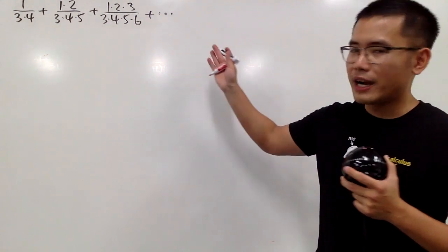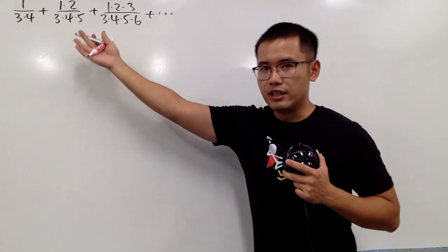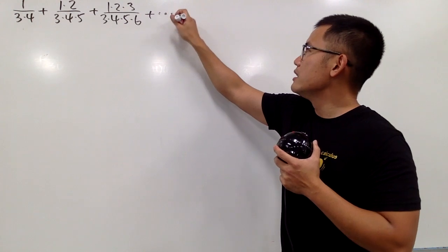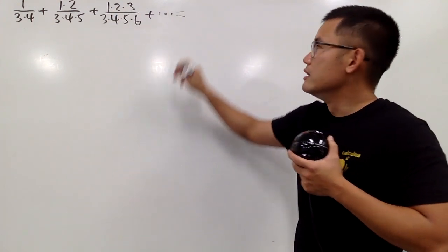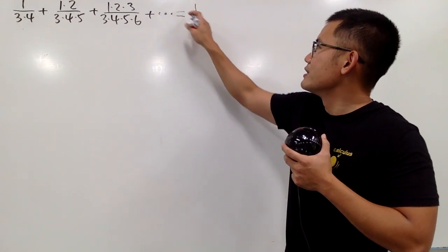Okay, hopefully you guys have a chance to try this, and now let me tell you guys that the answer to this right here is... As we can see, we have the 1 right here and the 6 right here, so it's just 1 over 6.